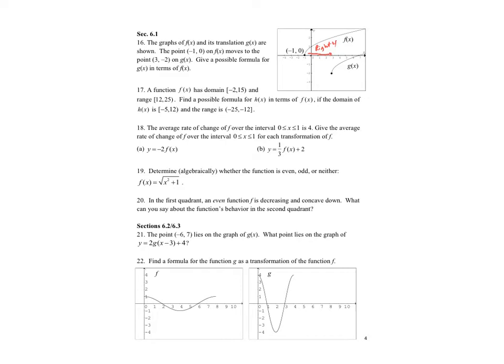And we have shifted down by two. So how do we write that in our function? We can say g of x is equal to f of x minus four, and then down two will be minus two. So that is our function there.